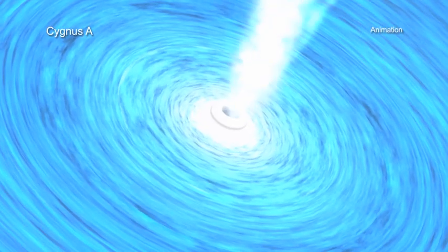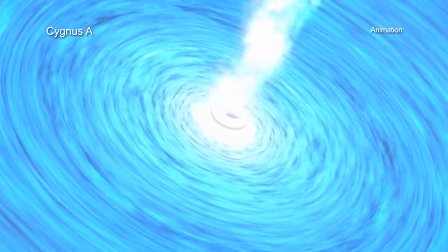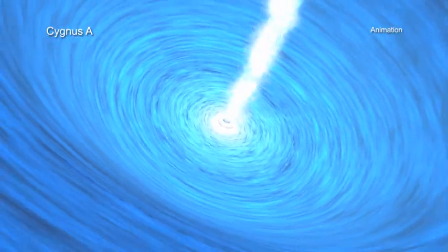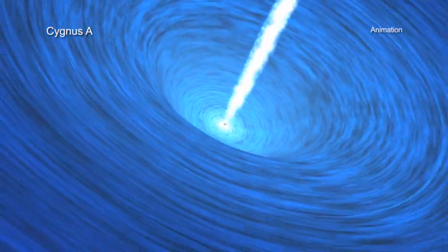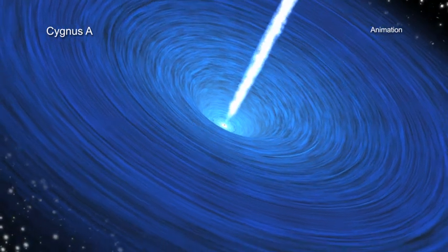Energy produced by jets from black holes can heat intergalactic gas in galaxy clusters and prevent it from cooling and forming large numbers of stars in a central galaxy like Cygnus A.